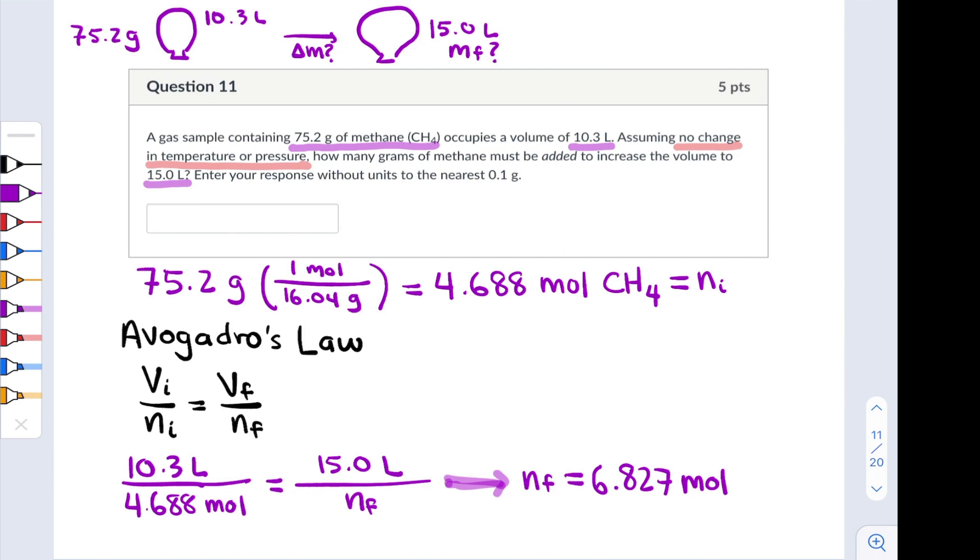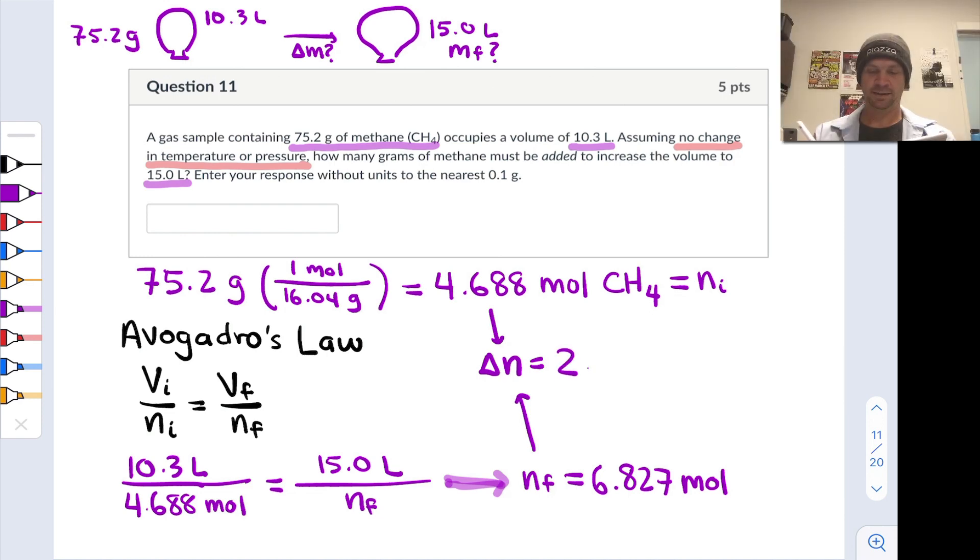Now we can consider n final minus n initial as the delta n. The change in number of moles is n final minus n initial, and doing that math I get 2.139 moles of CH4 must be added to the balloon to increase its volume from 10.3 liters to 15 liters.